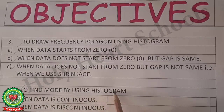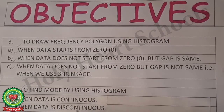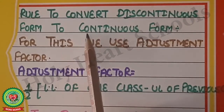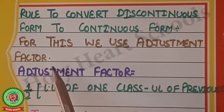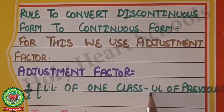There will be two cases: case number one when data is continuous, and case number two when data is discontinuous. To convert discontinuous form to continuous form, we use an adjustment factor. The formula for the adjustment factor is one-half of the lower limit of one class minus the upper limit of the previous class interval.